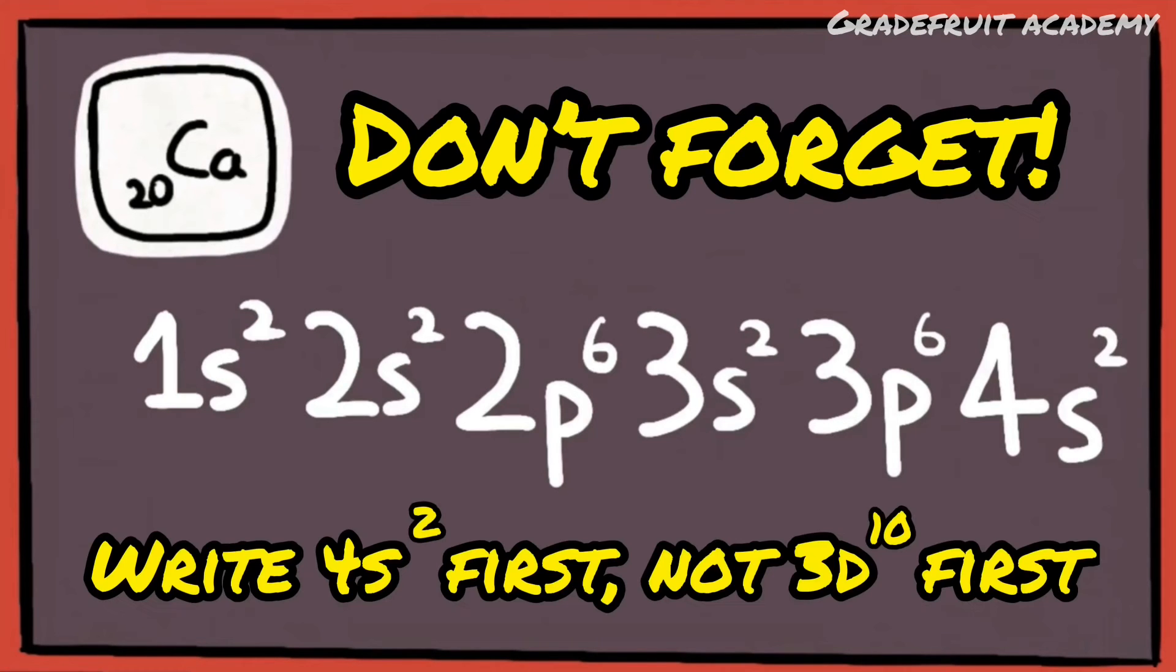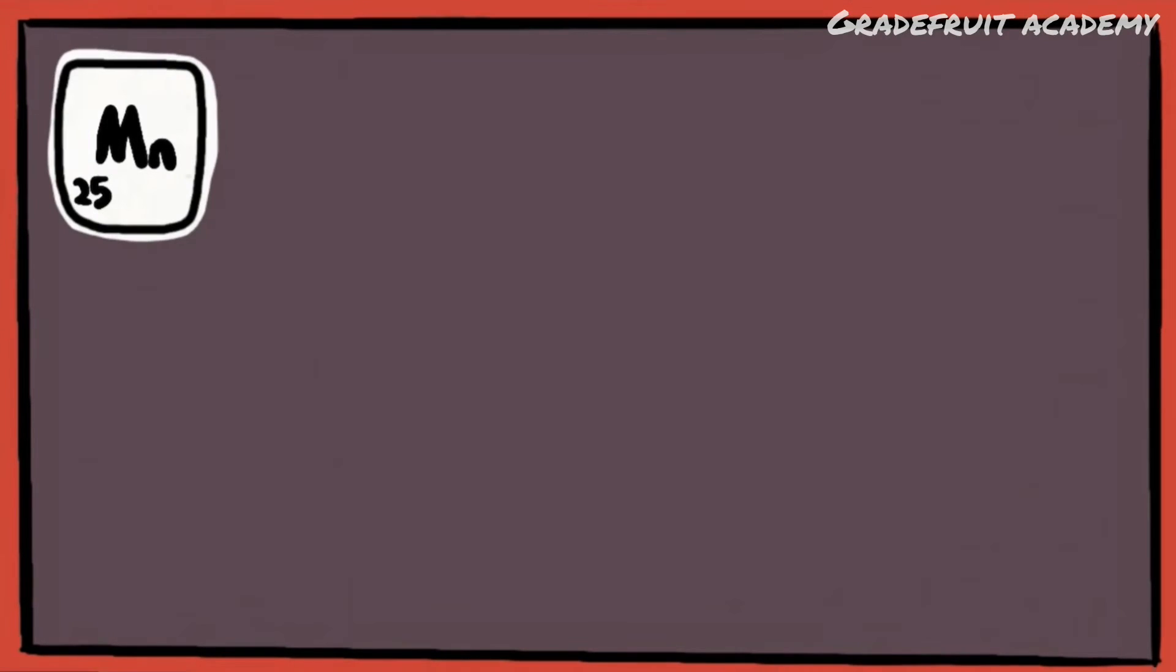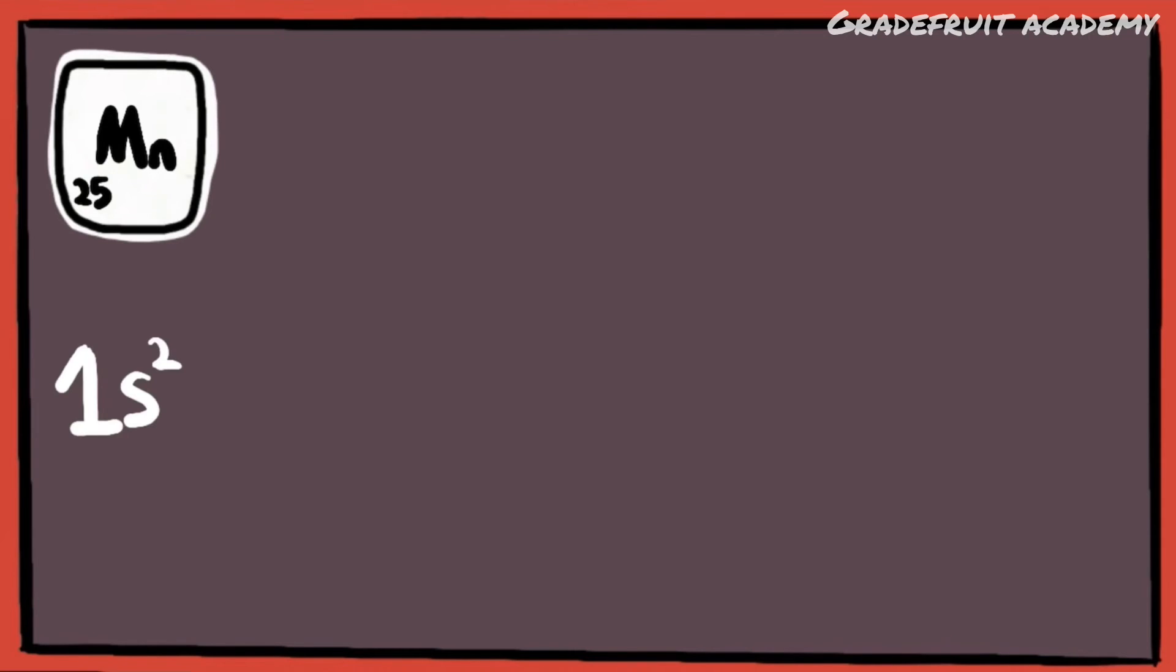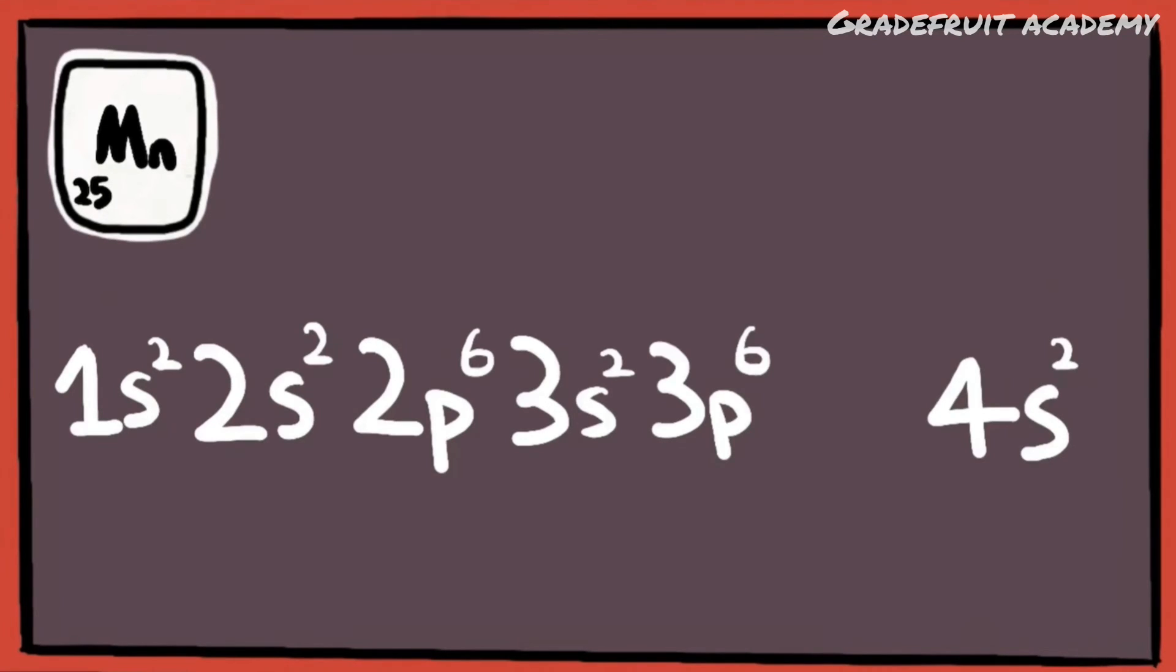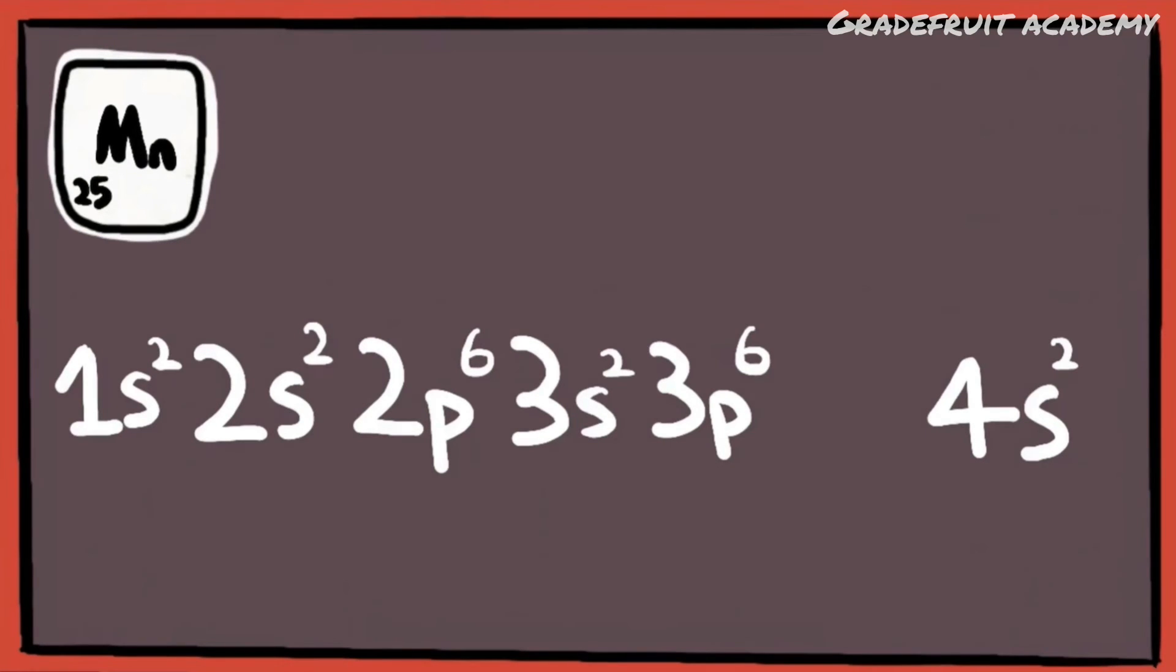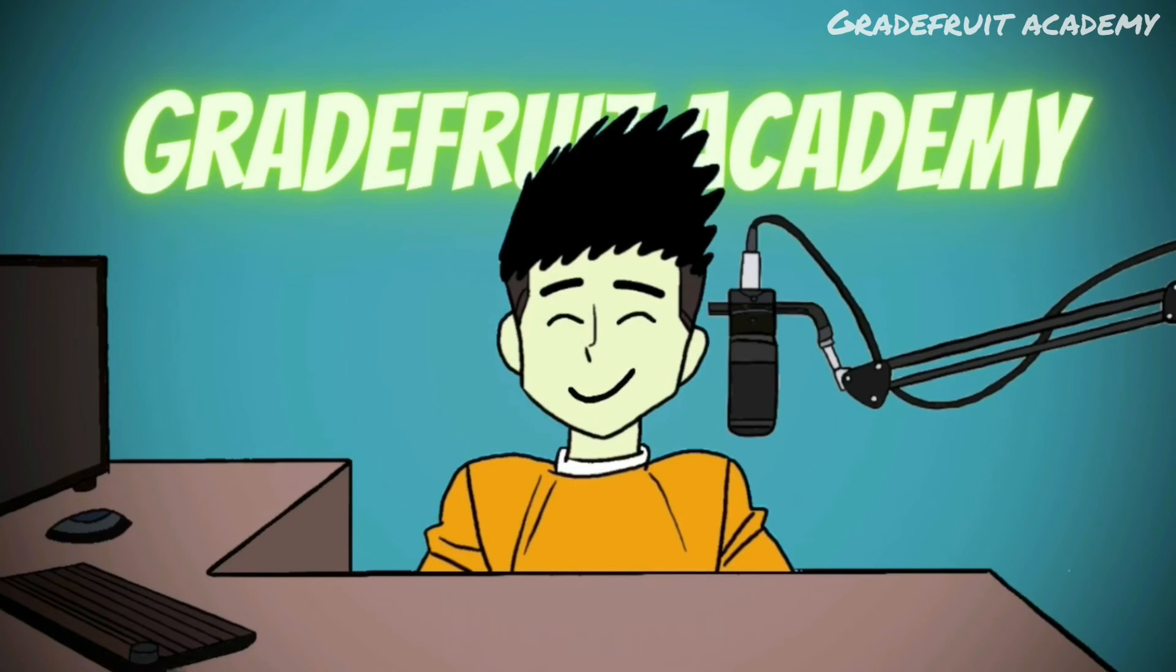Don't forget that we write 4s² first and not 3d¹⁰ first. For manganese with 25 electrons, it would be 1s², 2s², 2p⁶, 3s², 3p⁶, 4s². And so far, we've filled a total of 20 electrons, leaving us short of 5 electrons. So we add 3d⁵ to complete the electronic configuration. That wasn't so bad, right?